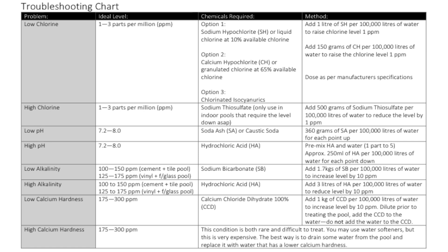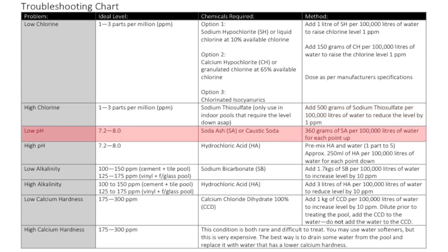If the chlorine is high, the free chlorine level still needs to be one to three parts per million. The chemical we're going to dose into the pool is sodium thiosulfate. What we need to do is add 500 grams of sodium thiosulfate per 100,000 litres of water to reduce the level by one part per million.